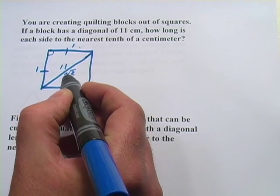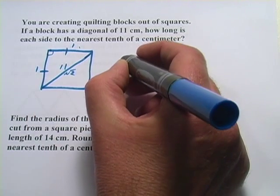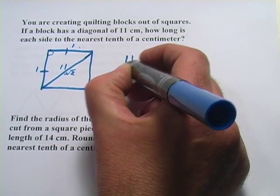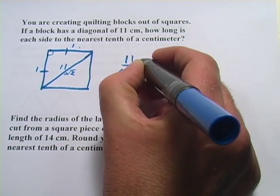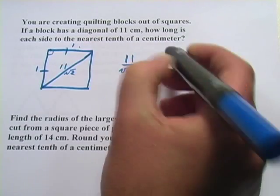Right now we've got the square root of 2 side measuring 11 centimeters. So I'm going to write a proportion like this, 11 is to the square root of 2 as what we're looking for, the real length of this side is to 1.